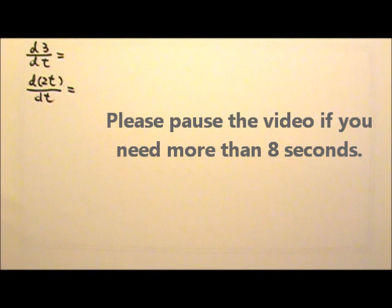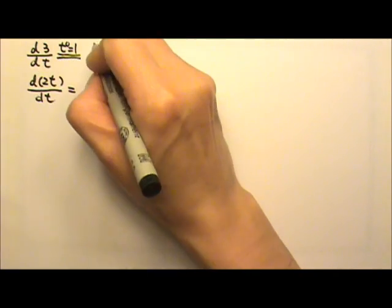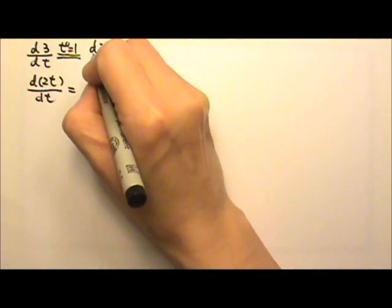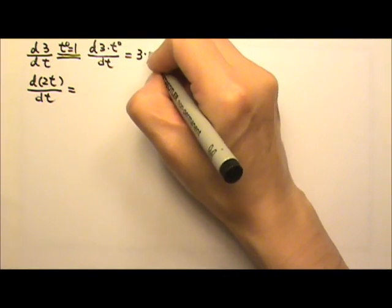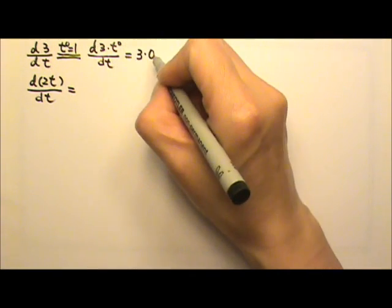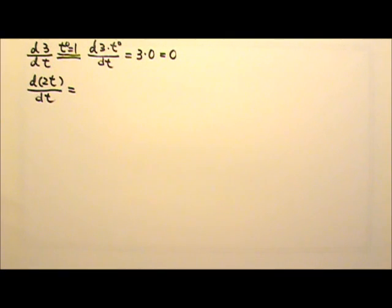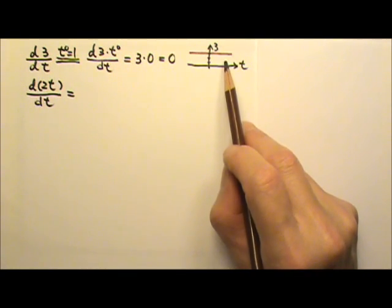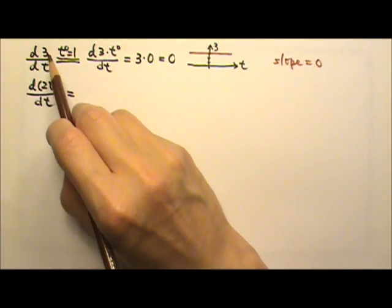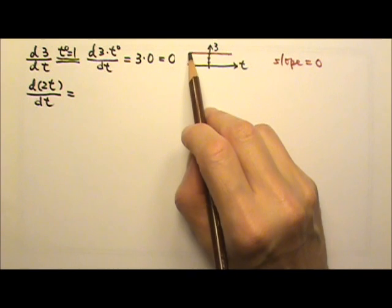Now let's try these. Because t to the 0th degree is 1, the constant 3 is the same as 3 times t to the 0th. The coefficient 3 stays, we bring the exponent down — 0 — and lose 1 degree of power. But multiplying anything by 0 gives 0, so the answer is 0. If I plot a graph for 3 as a function of t, I get a horizontal line through 3. The slope of this graph is 0, which equals the derivative of 3. The derivative of a constant is 0, because the slope of a constant graph is 0.